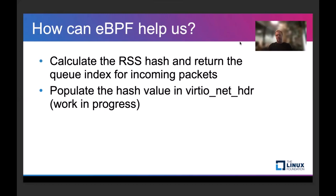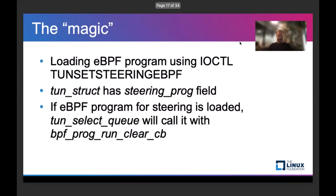How can eBPF help us? We want two things: RSS hash calculation and determination of the queue index for each incoming packet to be done by eBPF, and we want the hash value in the VirtIO network header to be populated from the eBPF program. This is still work in progress. The mechanism: we load the eBPF program from QEMU using a specific IOCTL. In the Linux kernel, the TUN device structure has a steering_prog field — this is the loaded eBPF program. When it's loaded, TUN's select_queue will use it to calculate the queue index.